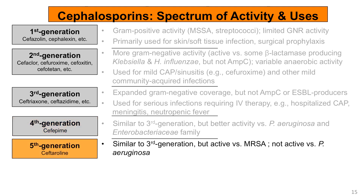Ceftaroline is the only example to date of the fifth generation or next generation cephalosporins. Ceftaroline has a very similar spectrum of activity to the third generation cephalosporins, with the added bonus of covering MRSA. Unlike the fourth generation cephalosporins, it does not have activity against Pseudomonas aeruginosa.